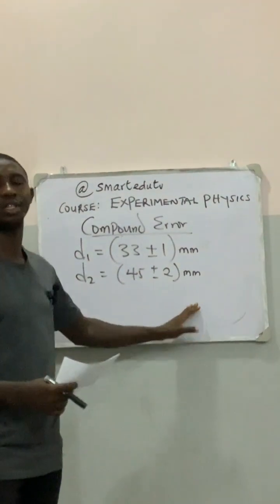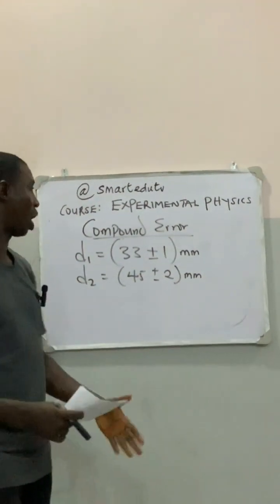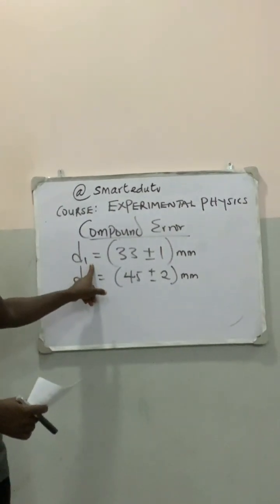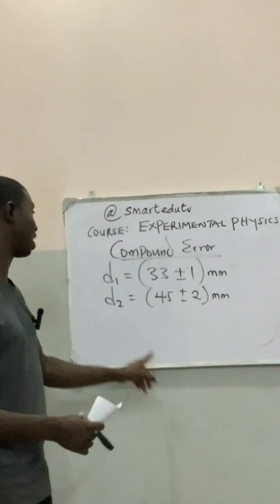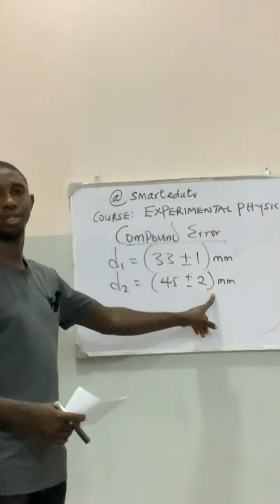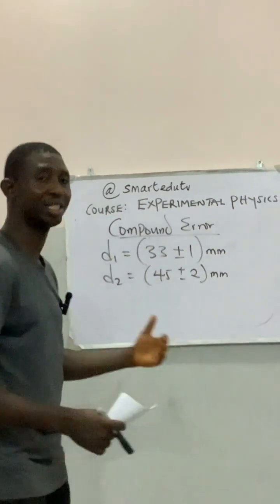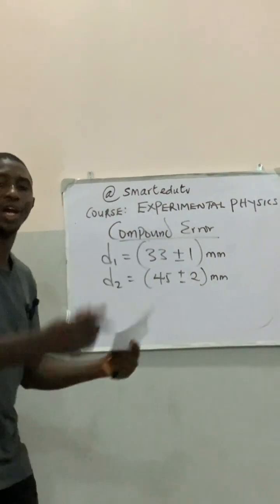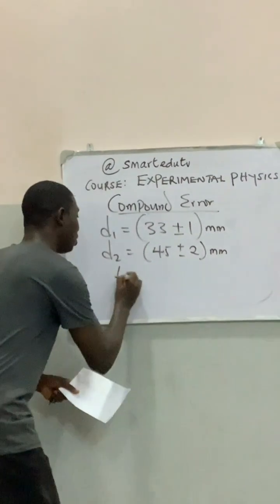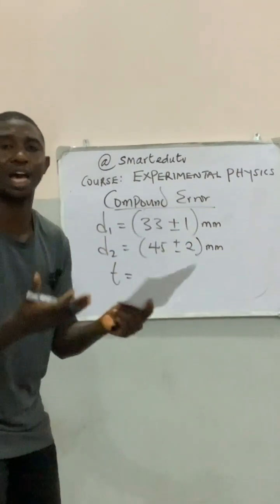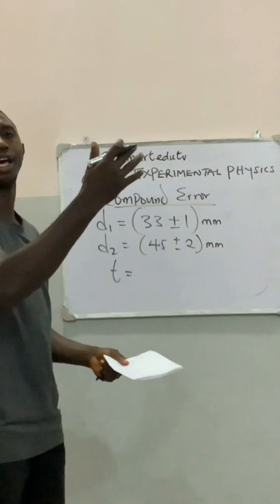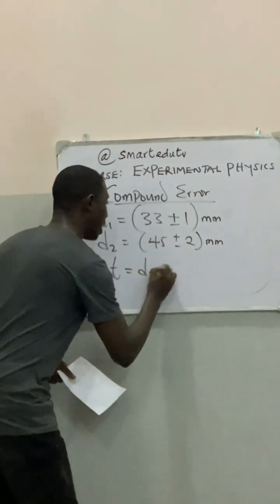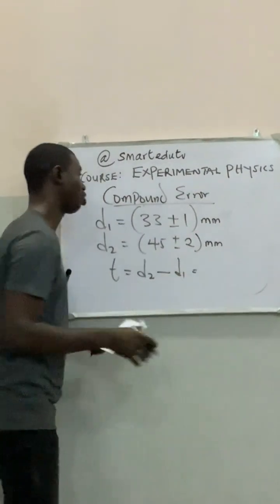To calculate the percentage error in the thickness of the pipe, we first need to find the thickness. The thickness of the pipe is given as the difference in the diameters, that is D2 minus D1. The actual value of D2 is 45 millimeters and D1 is 33 millimeters.